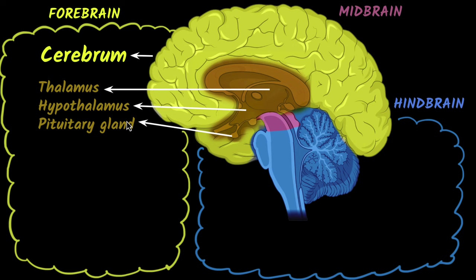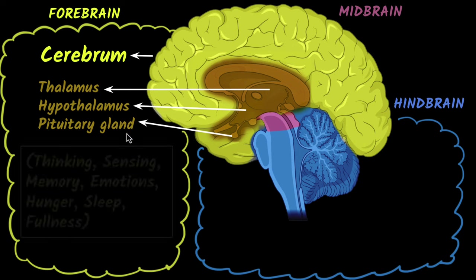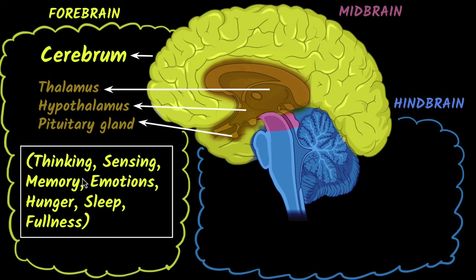What are the functions? Well, a few functions include thinking, sensing objects, and memory — memory comes from your forebrain. Your emotions too. Love, for example, doesn't come from the heart; it comes from the forebrain.